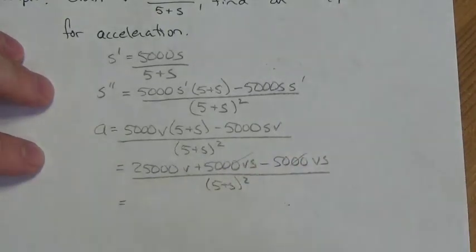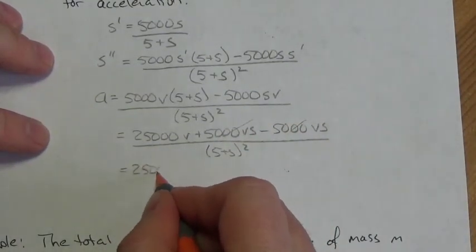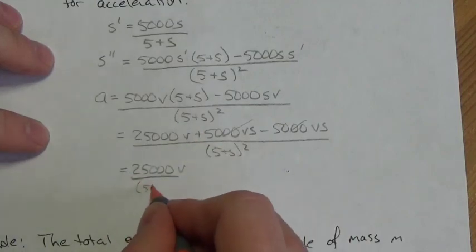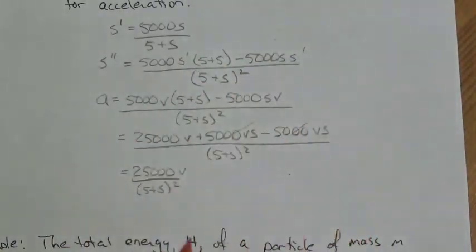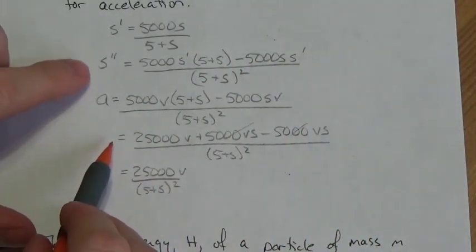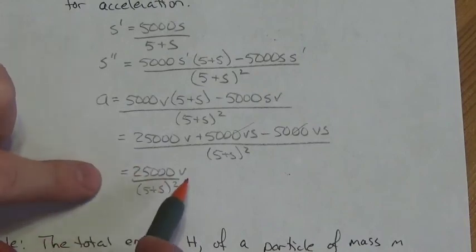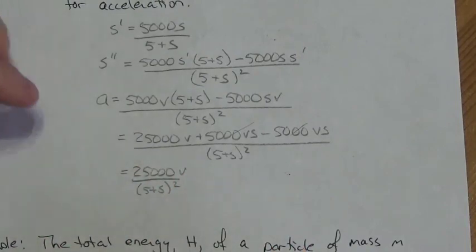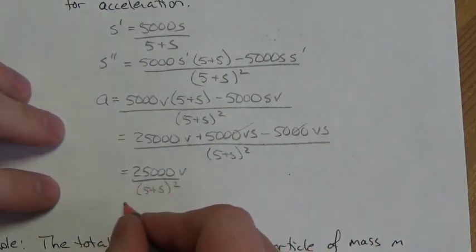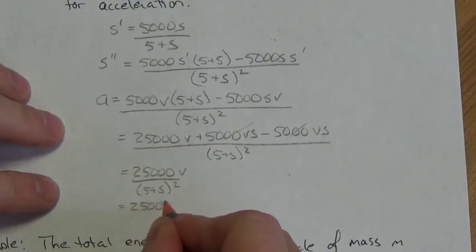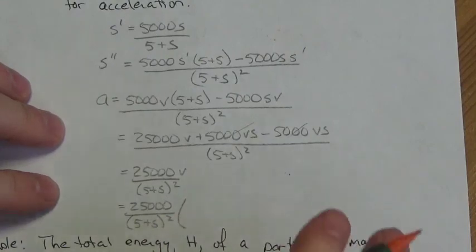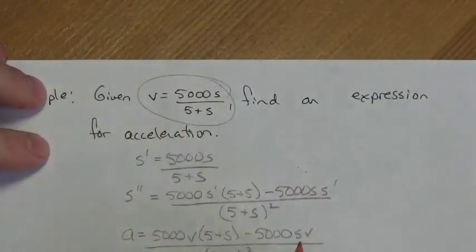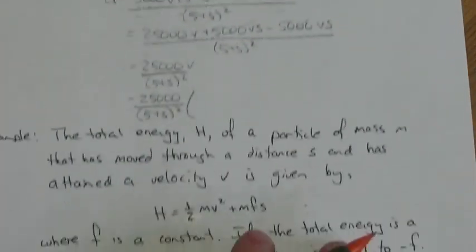Those middle terms cancel — that's wonderful. I'm left with 25000v over (5 + s) squared. But this is acceleration, the second derivative of displacement, written in terms of velocity, the first derivative. I don't like that, so I'm going to replace v with the expression from the question: 5000s over (5 + s).